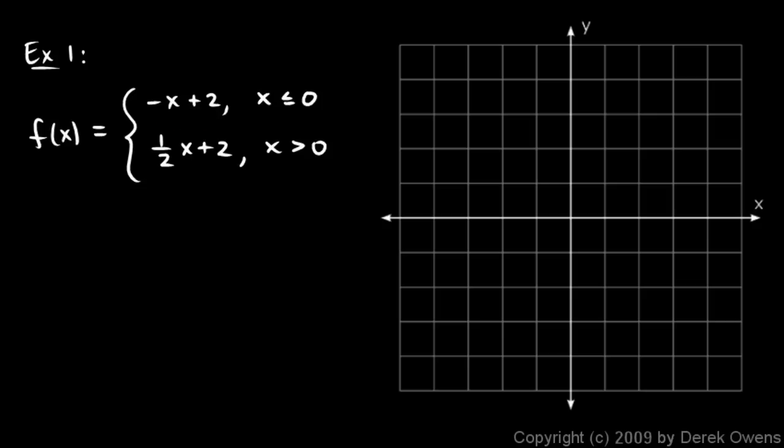Negative x plus 2 is a line. I'll do this one in yellow. Negative x plus 2 is a line. It has a slope of negative 1 and a y intercept of 2. So, let's plot our y intercept of 2 and a slope of negative 1. Now, this line would look something like this, but I'm not going to draw that. I'm only going to draw it when x is less than or equal to 0. So, it will look something like this. It will continue. It continues forever in that direction. That's what that arrowhead means. But I stop there at 0 because when x is greater than 0, I have a different rule.